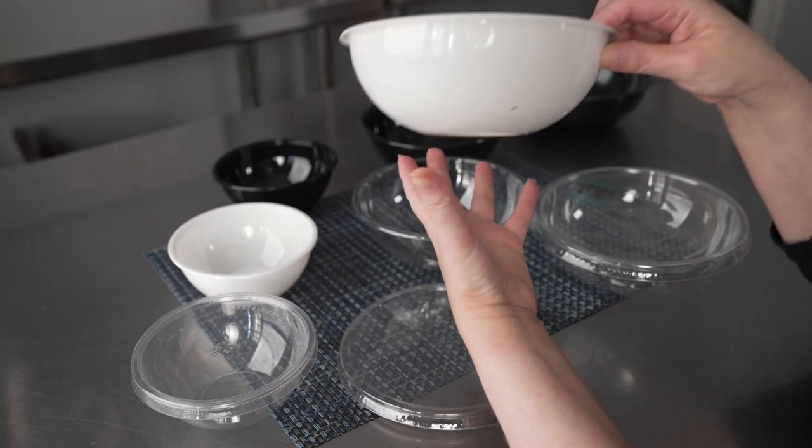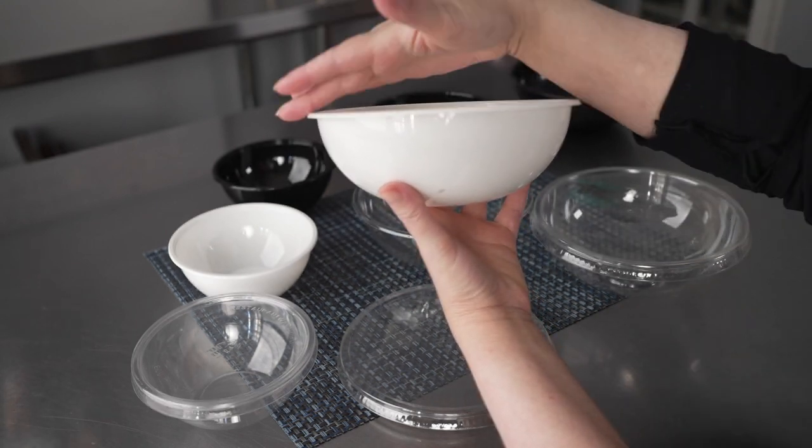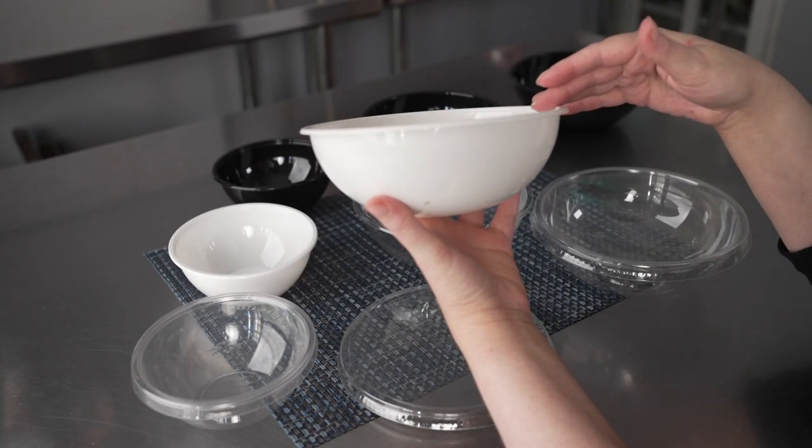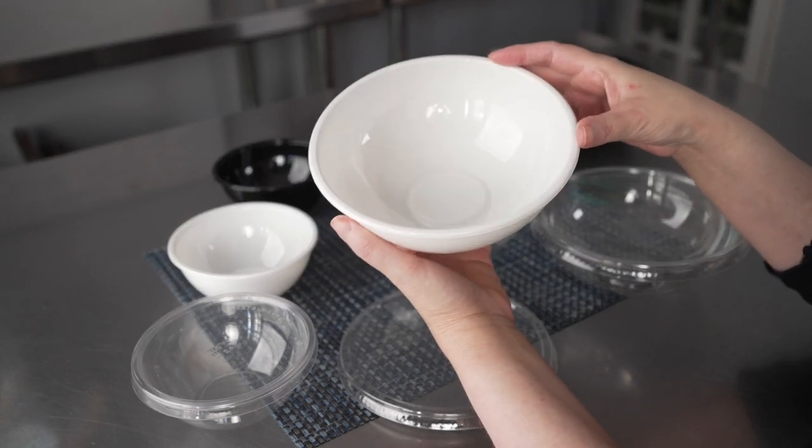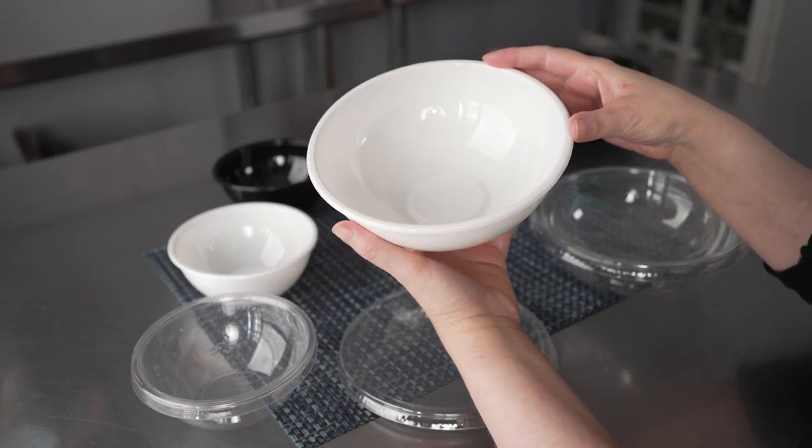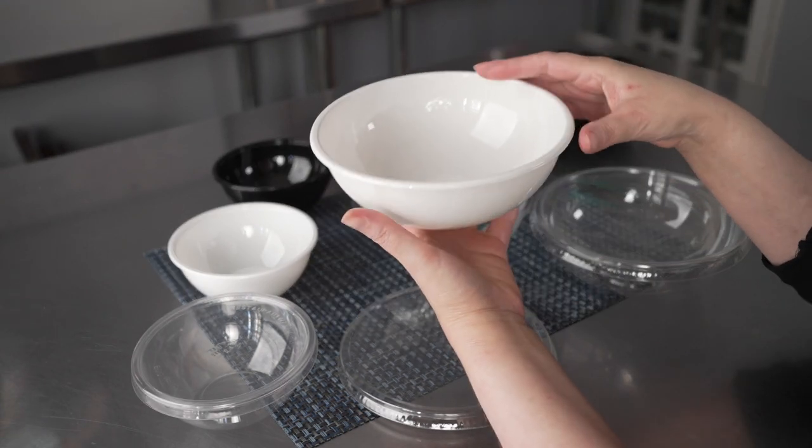And then finally, we have the 21 ounce, which is six and three quarters across. It's great for that full sized meal salad or a nice cold dish, maybe something like poke that's over rice.